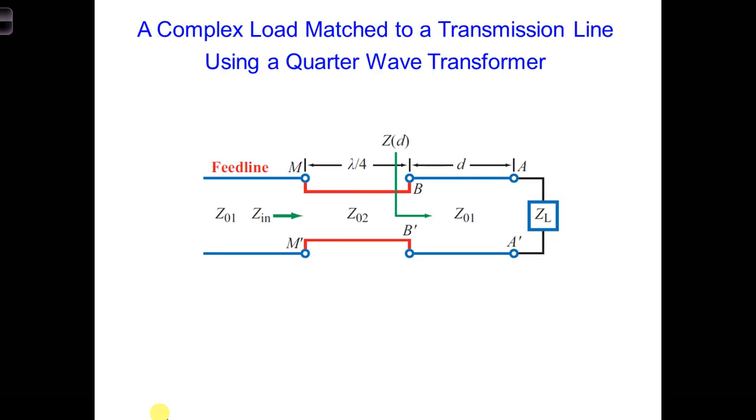This means that if we have our antenna, ZL equals 35 minus J 70 ohms at the end of a transmission line, and we connect it here to a section of transmission line with Z naught equals 70 ohms, and the length here is 0.365 lambda.